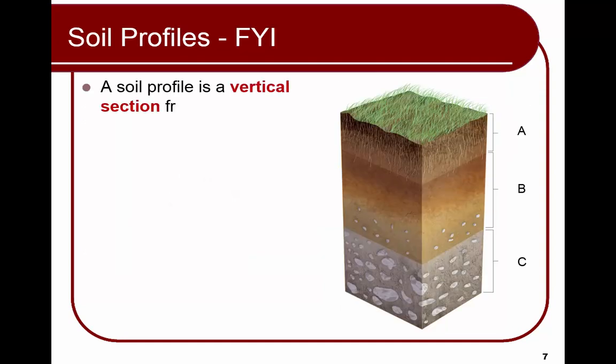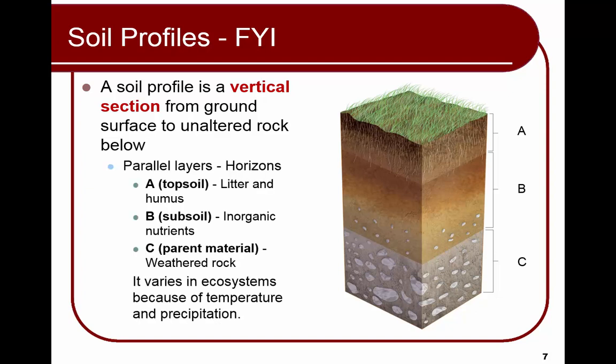A soil profile is a vertical section showing from the ground surface down to the rock below. Horizon A at the top is your topsoil — litter and humus with nutrients. Horizon B is your subsoil with inorganic nutrients. Horizon C is weathered rock. These layers vary across different ecosystems due to differences in temperature, precipitation, and climate.